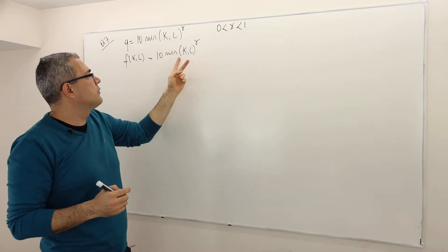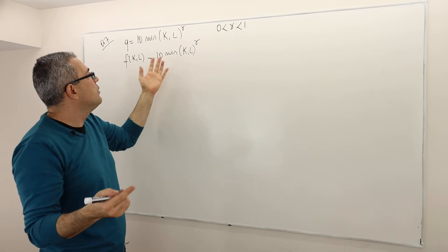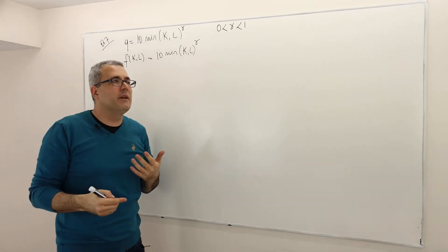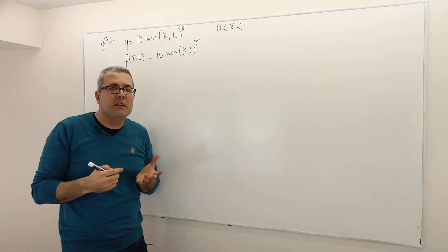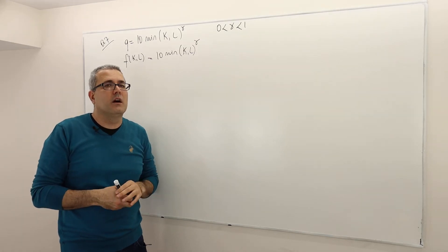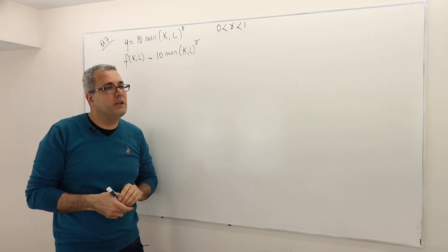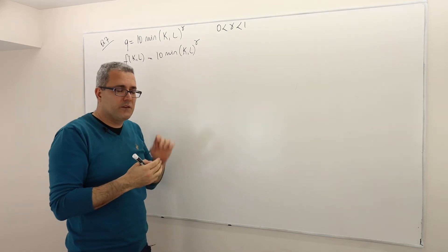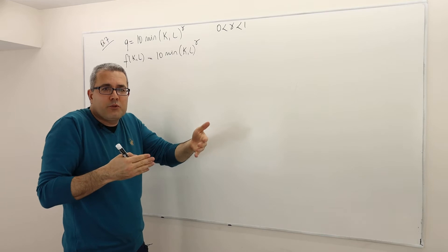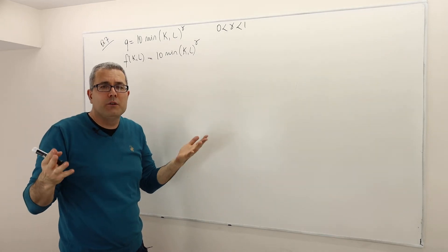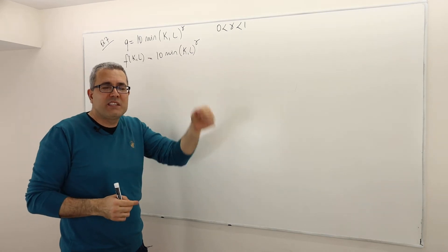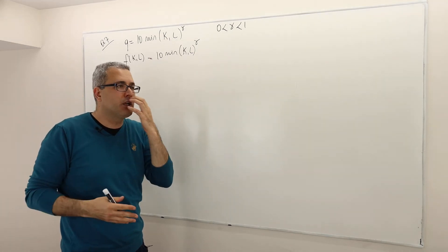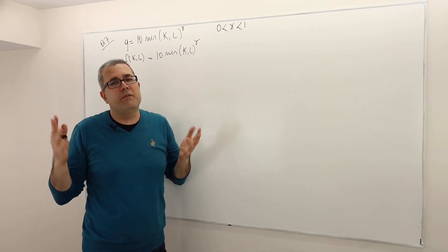What does increasing returns to scale mean? If you double your inputs — two times K, two times L — you are going to quadruple your output. There is no such technology in reality, as far as I know. So the more input I use, even more output I can produce, meaning my marginal cost is going to be very, very small.